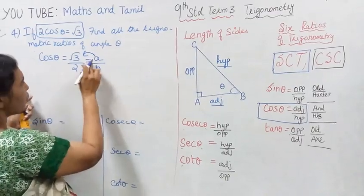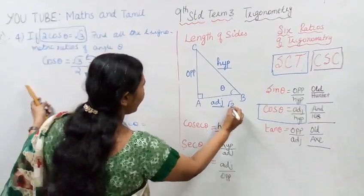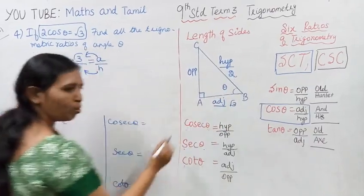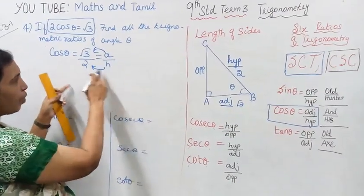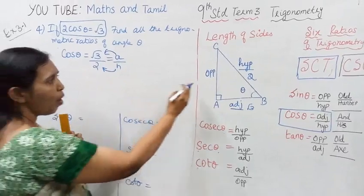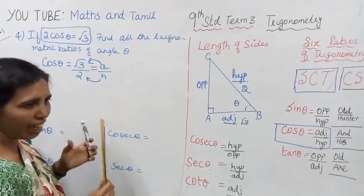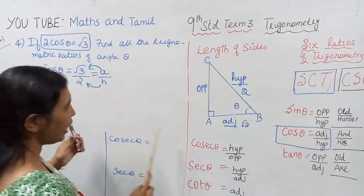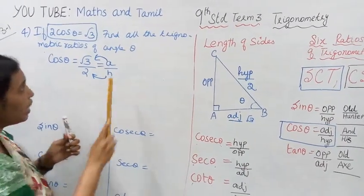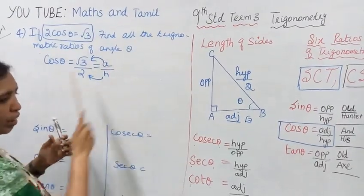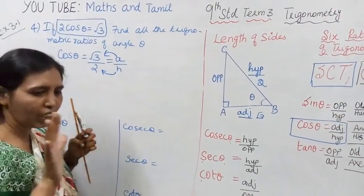Adjacent is root 3, hypotenuse is 2. cos theta is adjacent by hypotenuse — A by H. Since cos theta equals root 3 by 2, find all the trigonometric ratios: sin, cos, tan, sec, cosec, and cot.